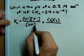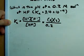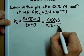What we're left with of HF is what we started with, 0.2, minus the amount that we consumed.